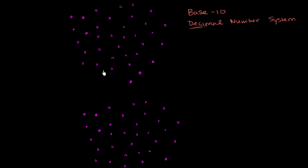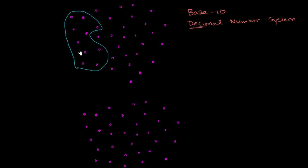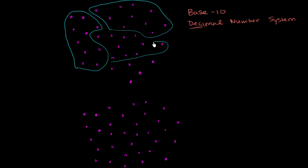So let's divide this into as many groups of 10 as we can. This is 1, 2, 3, 4, 5, 6, 7, 8, 9, 10 — so let me separate these off. That is one group of 10. Let me find another group of 10: 1, 2, 3, 4, 5, 6, 7, 8, 9, 10 — so this right here is another group of 10. And then 1, 2, 3, 4, 5, 6, 7, 8, 9, 10 — so this right here is another group of 10. And then this over here is not a group of 10 — this is just 1, 2, 3, 4, 5.